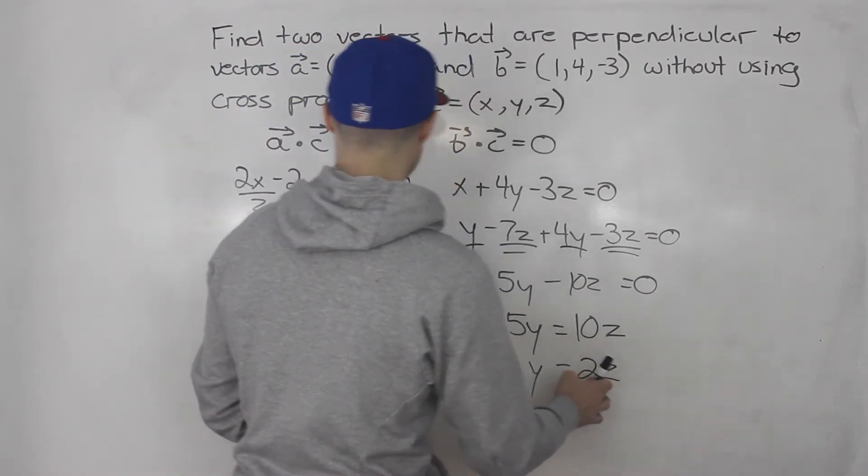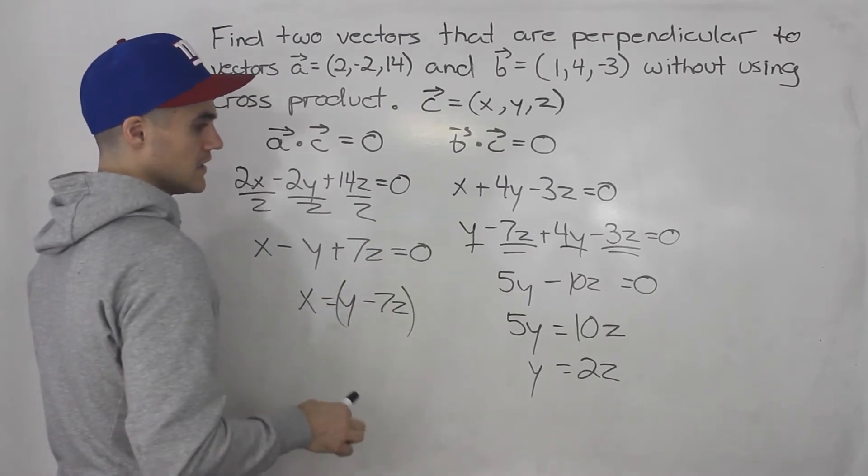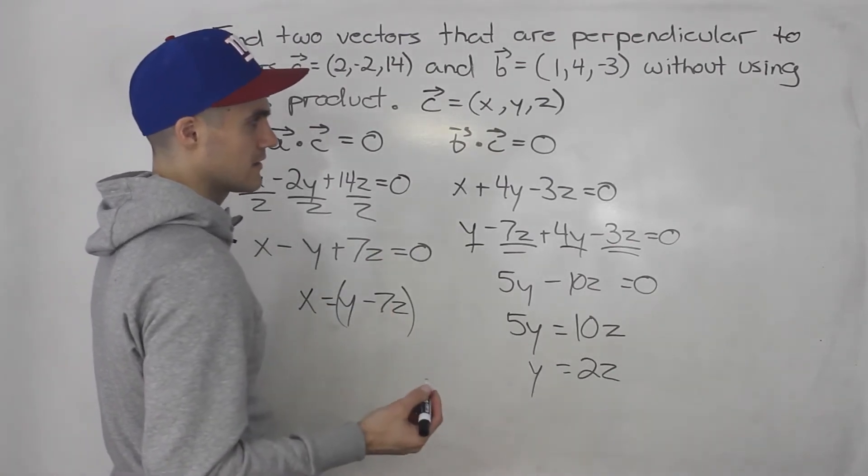And then when we have Y and Z, we could just plug it in to here or to here and solve for the X. So basically we can pick any value. So let's say we pick Z equaling 1.